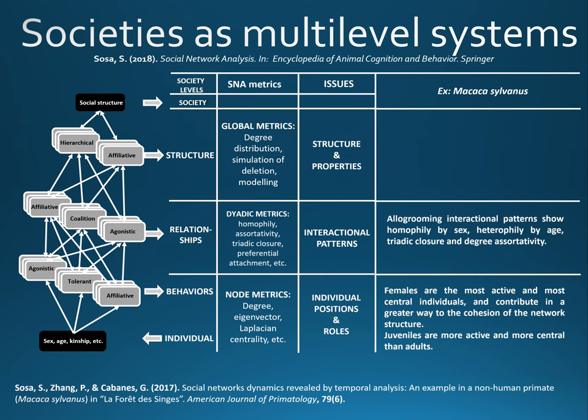I also highlighted the fact that a low grooming network is structured around homophily by sex, heterophily by age, triadic closure, and assortativity by degree.